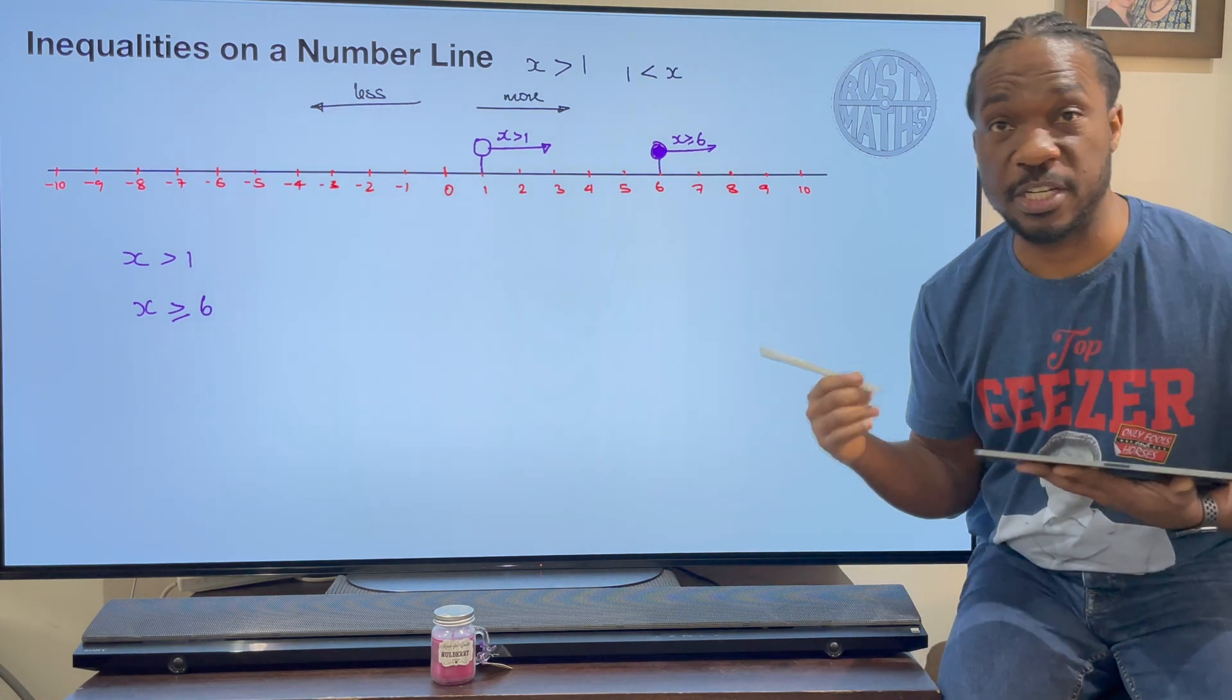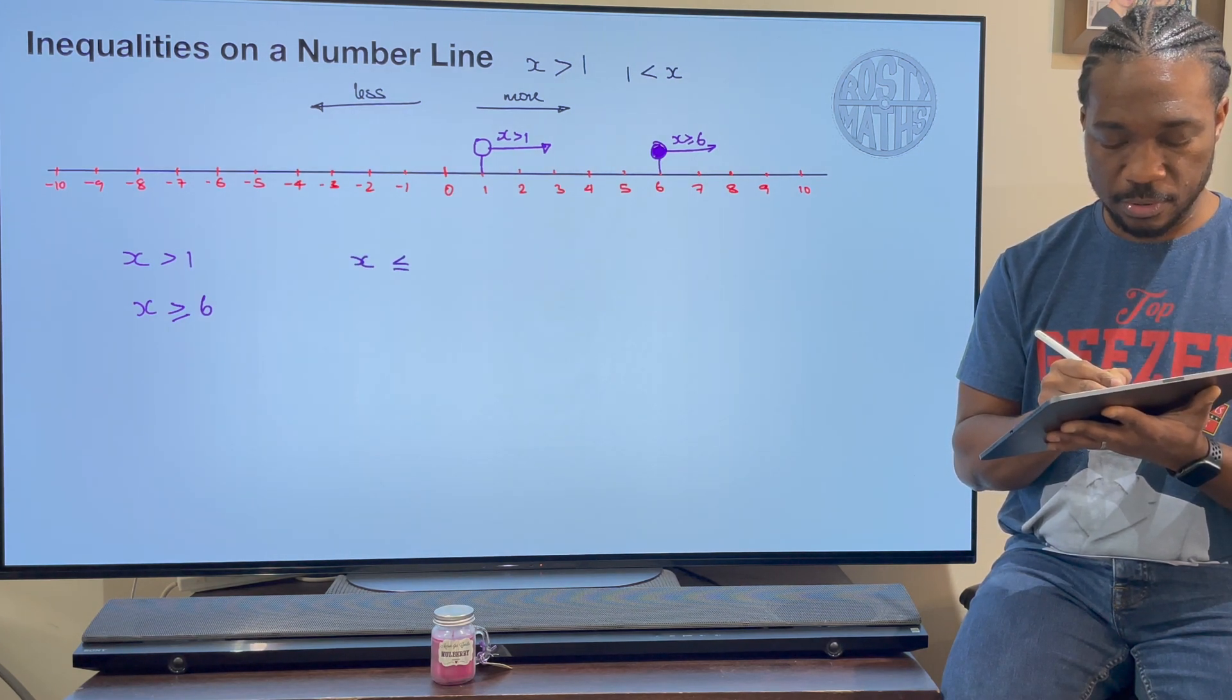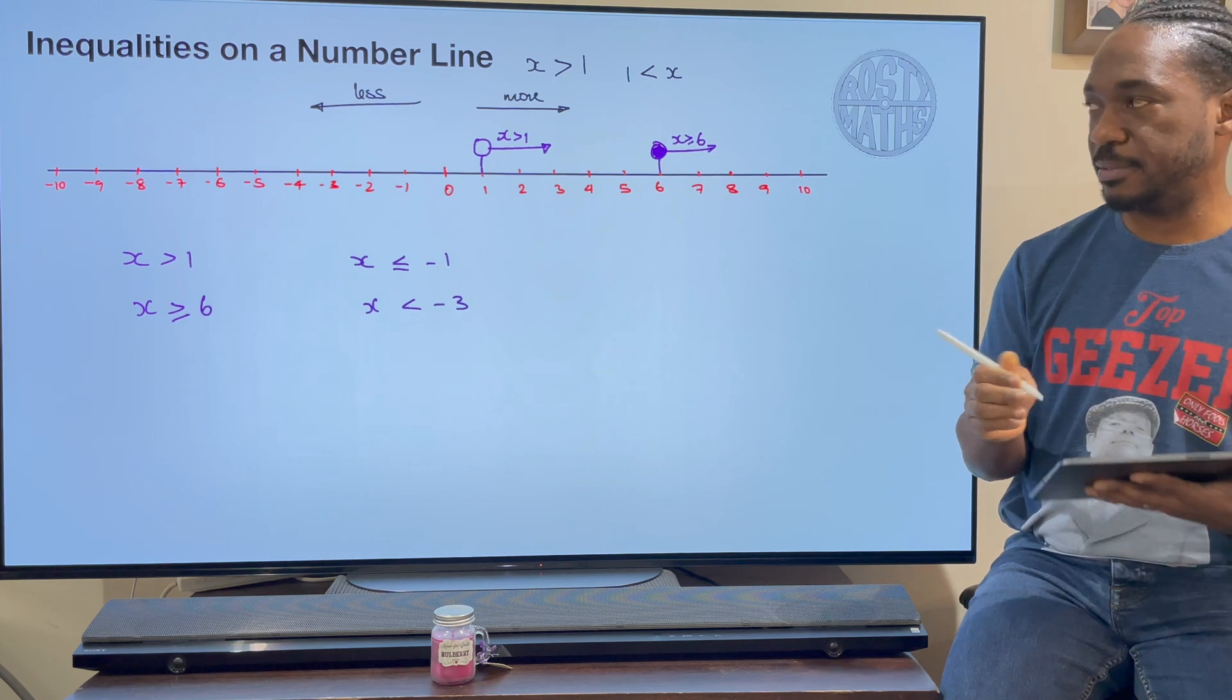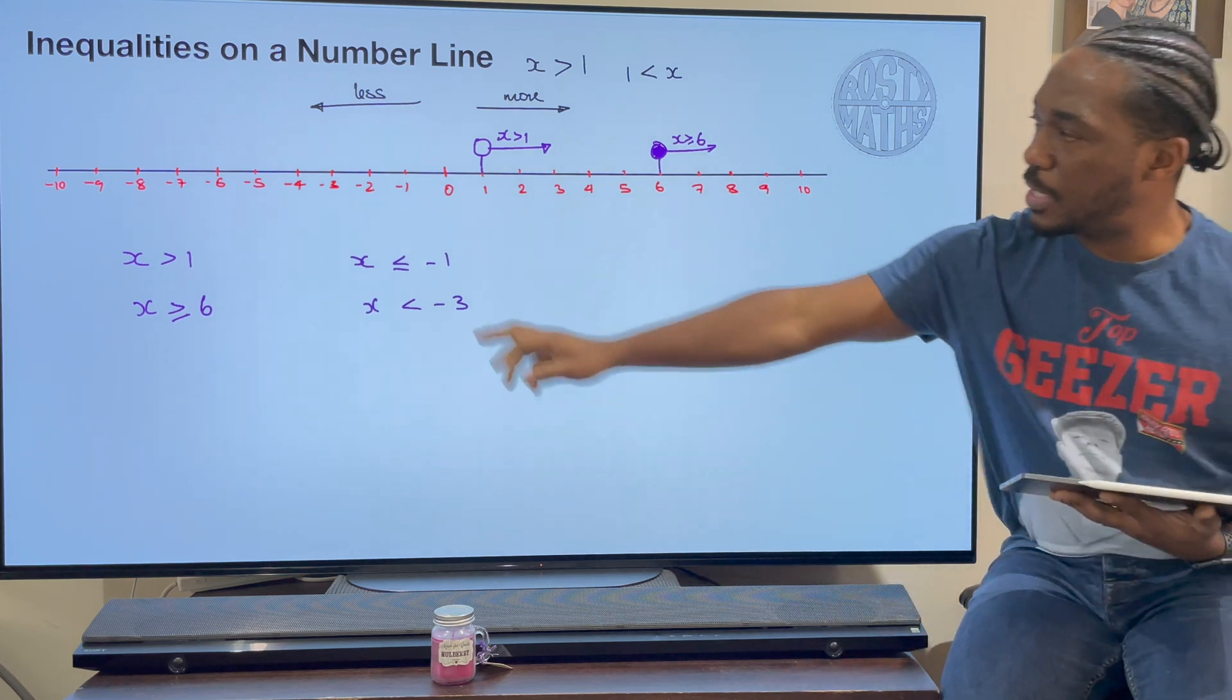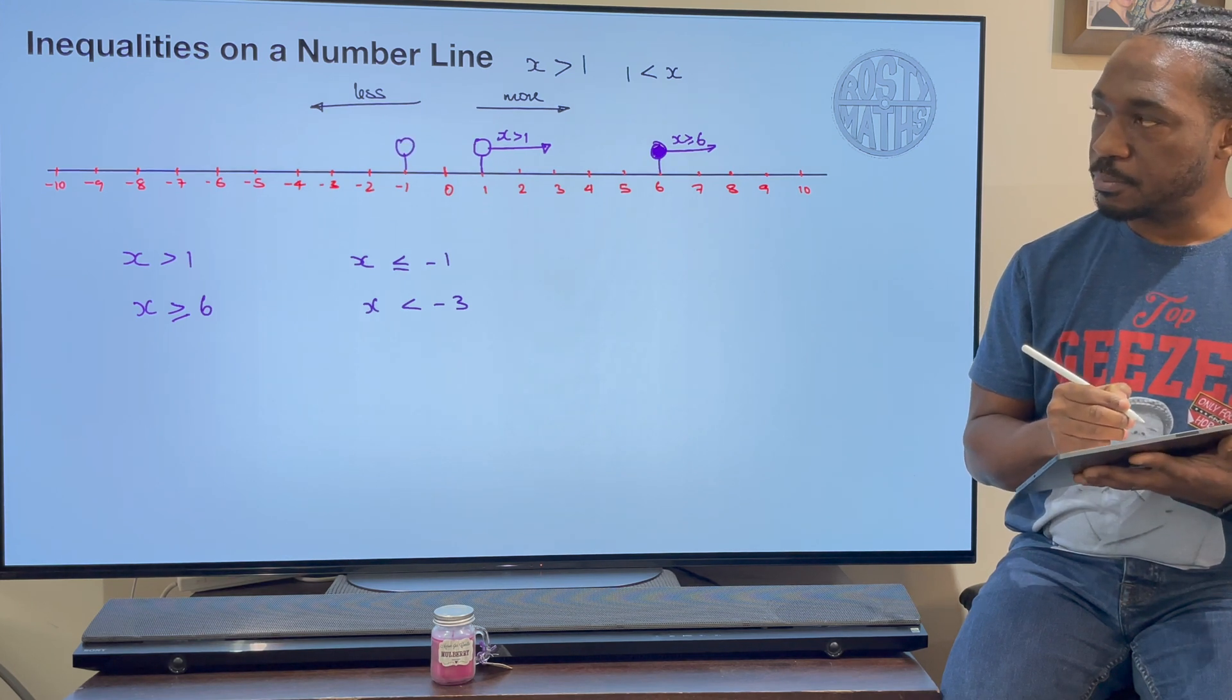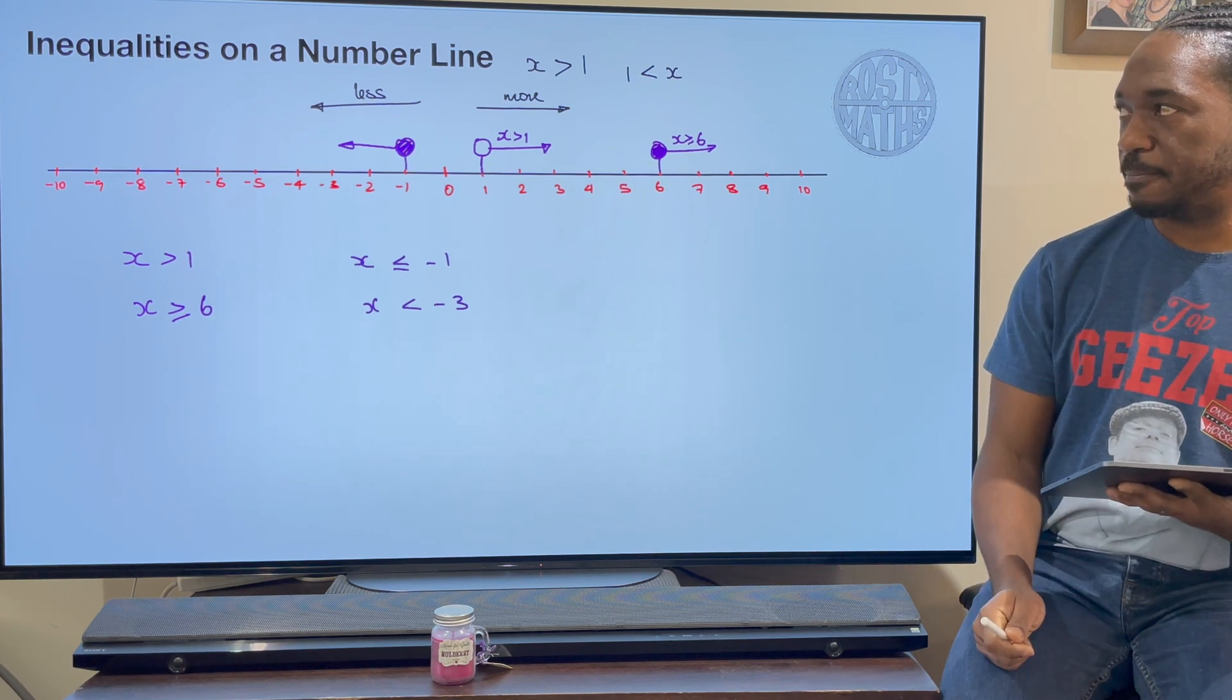At this point, you might want to pause the video and make yourself some notes to say leave it open if it's not equal to, but color it in if it is equal to. Let's look at a couple more examples and then we're finished because this is going to be a really short video. So now I'm going to go for x is less than or equal to negative 1, and x is less than negative 3.